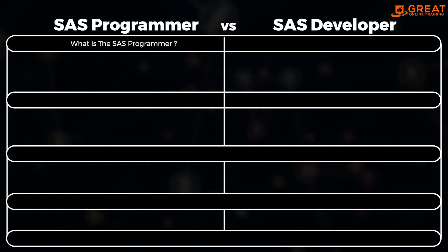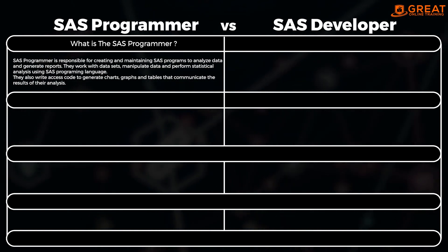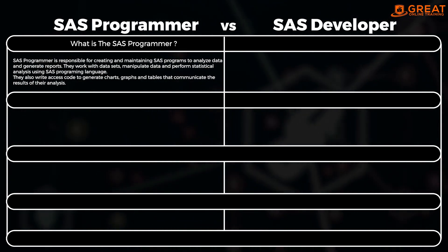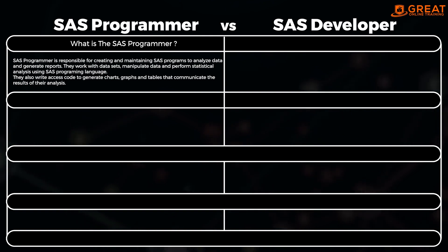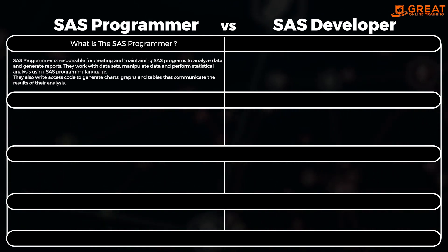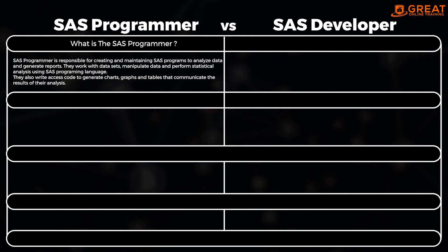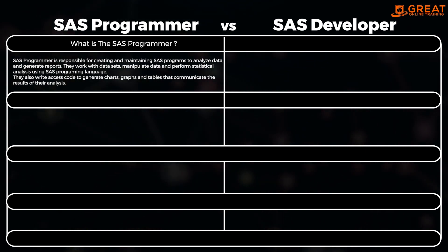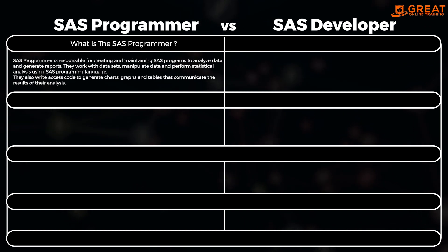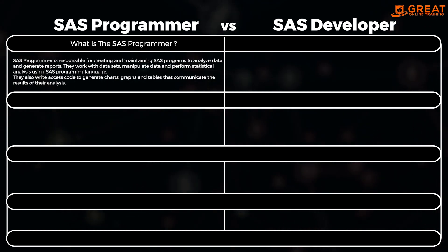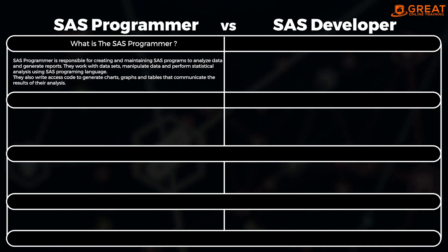What is a SAS Programmer? A SAS Programmer is responsible for creating and maintaining SAS programs to analyze data and generate reports. They work with data sets, manipulate data, and perform statistical analysis using SAS Programming Language. They also write SAS code to generate charts, graphs, and tables that communicate the results of their analysis.